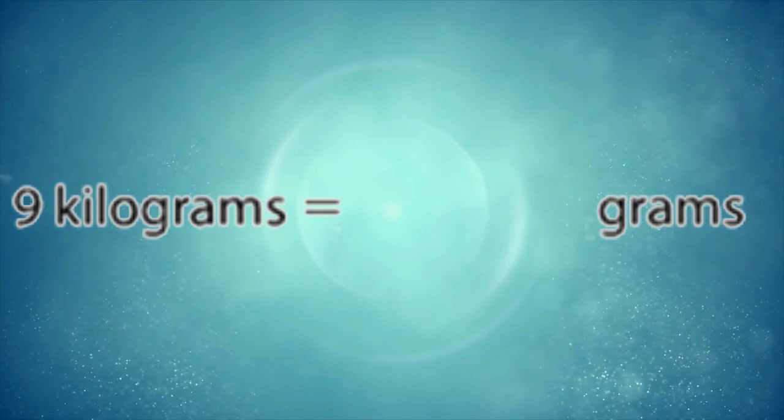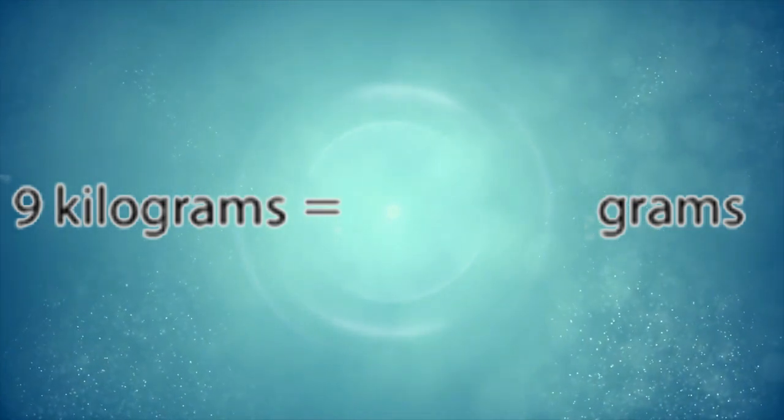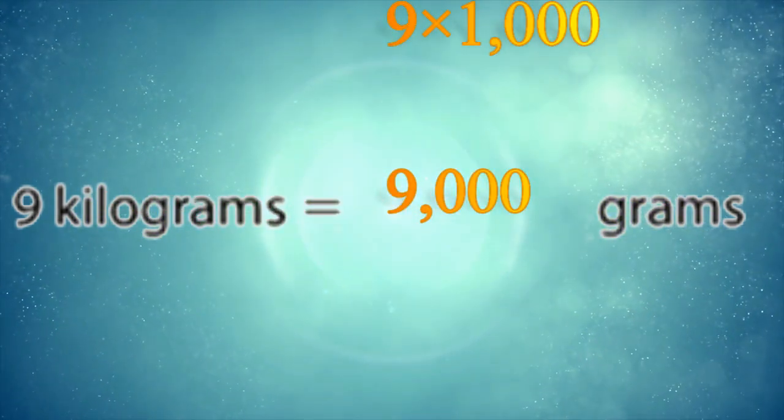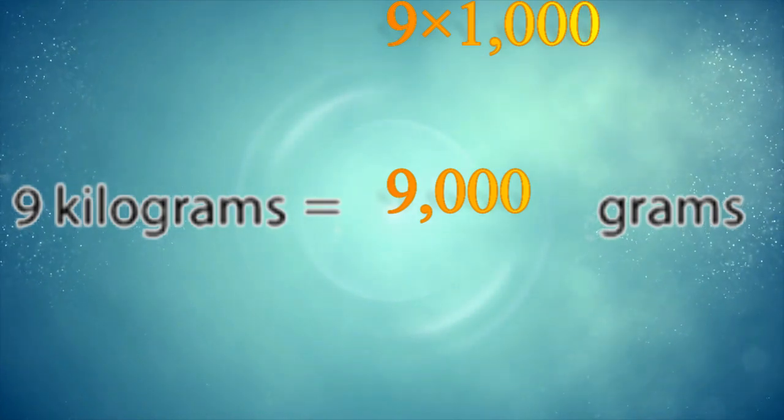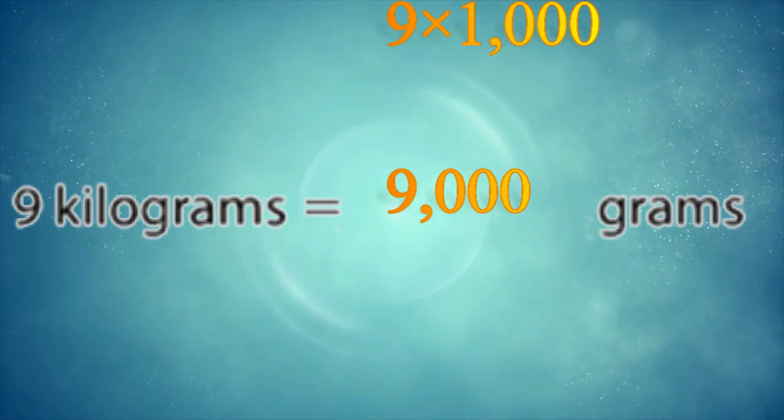The next example: 9 kilograms equals how many grams. One kilogram equals 1000 grams, so we're going to multiply 9 by 1000 equals 9000. So 9 kilograms equals 9000 grams. Thank you, goodbye.